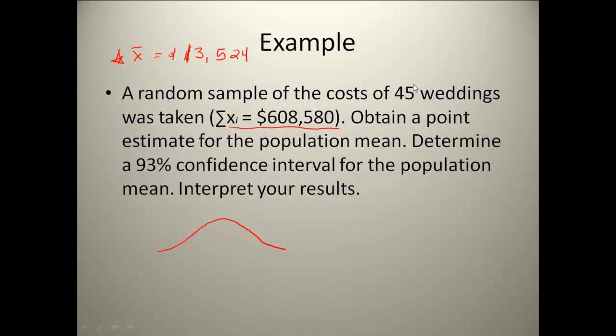What this looks like is we're going to have a normal curve. And the reason I know it's normal is that CLT theorem tells me as long as I have a sample greater than 30, my sample means are going to be normally distributed. So I know I'm going to have a fairly normal distribution. I know that mu sub x bar is also equal to my mu, and that's going to be right down the center. And now I need to do a 93% confidence interval for the population mean.